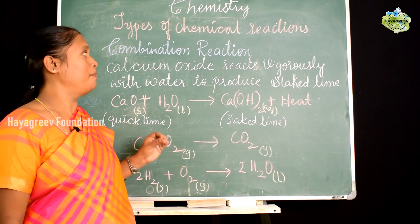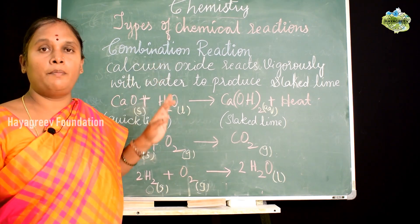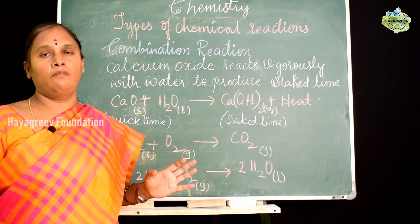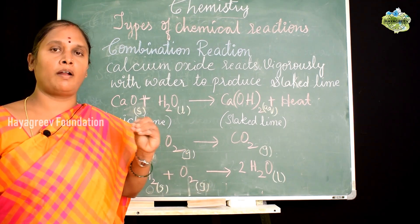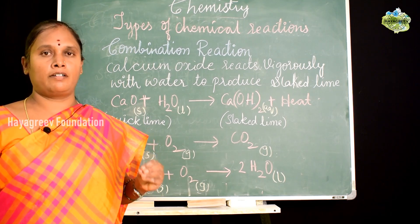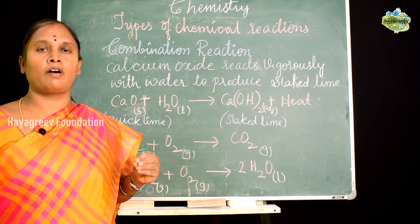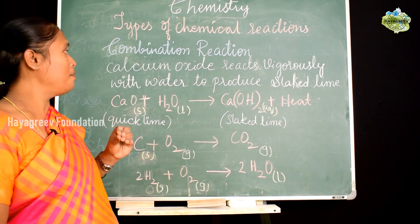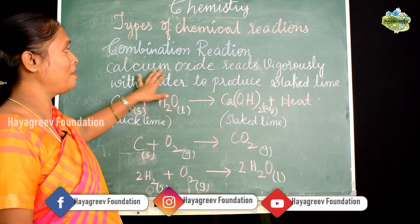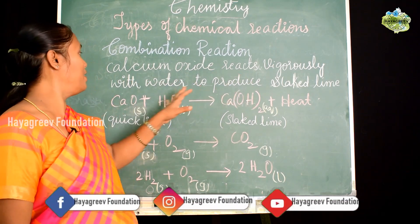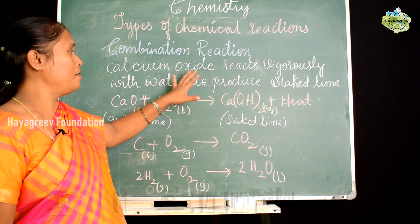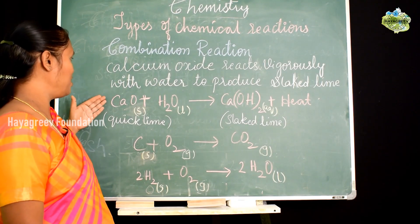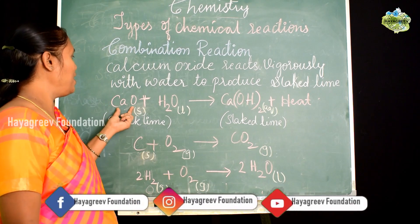First we will understand what combination reactions are. Combination reactions are those chemical reactions which involve the combination of two or more reactants to form a single product. For example, calcium oxide when it reacts vigorously with water it produces slaked lime. The chemical equation: calcium oxide, otherwise called quick lime, CaO, reacts with water.